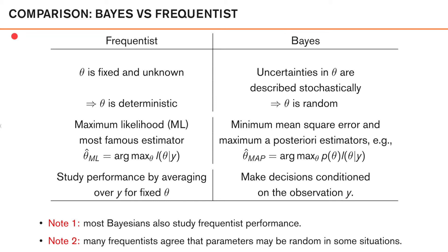So there are two main frameworks for making decisions: the Bayesian framework and the frequentist framework. In the Bayesian framework, uncertainties in the parameter of interest, theta, are described stochastically, which means that theta is modeled as random. Whereas in the frequentist setting, theta is fixed and unknown, and thus theta is deterministic.